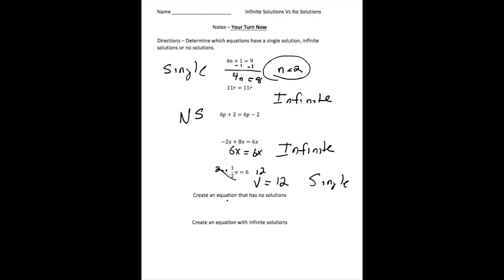Then you had to create two equations on your own — one with no solution, and one with infinite solutions. For example, a no solution equation could be n plus 1 equals n. And one with infinite solutions could be 2n equals 2n. I hope you now have a better understanding of the differences between infinite solutions, no solutions, and equations that have just one solution.